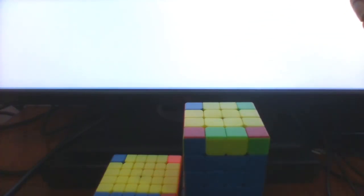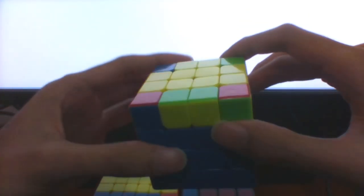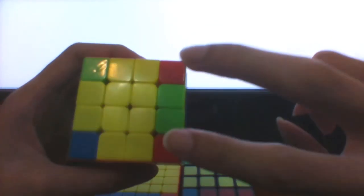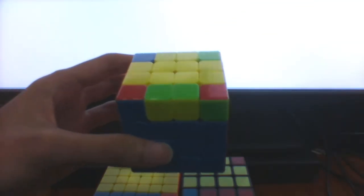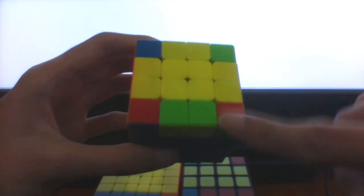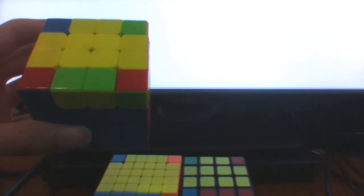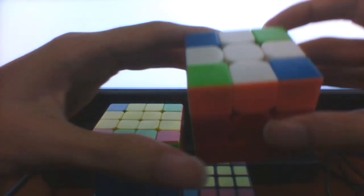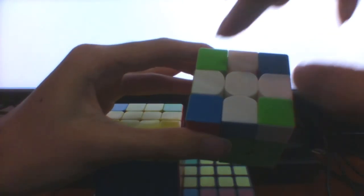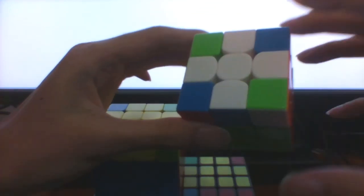The second case we are going to look at is this one where the flipped edge is between the two corners with matching colors. So like before, if we just do the OL parity algorithm from here, we will end up with this CLL case with the opposite corners having the same color on top.